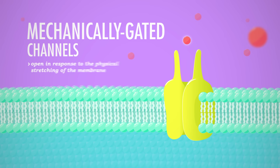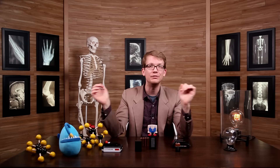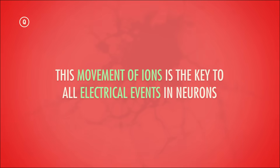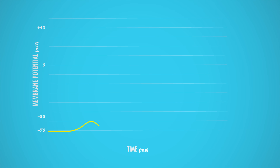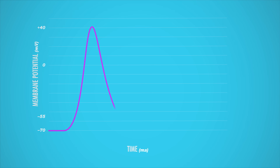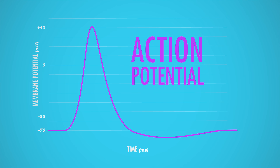Then we also have mechanically-gated channels, which open in response to physically stretching the membrane. When the gates do open, ions quickly diffuse across that membrane, down their electrochemical gradient, evening out the concentrations and running away from other positively charged ions. This movement of ions is the key to all electrical events in neurons. Not all of your body's electrical responses are the same. If only a few channels open and only a bit of sodium enters the cell, that causes just a little change in the membrane potential in a localized part of the cell — this is called a graded potential. But in order to send long-distance signals all the way along an axon, you need a bigger change, one big enough to trigger those voltage-gated channels. That is an action potential.